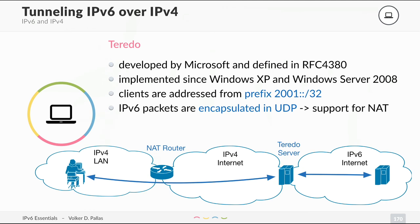This tunnel operates within UDP, traversing the local IPv4 LAN, the router, and the IPv4 internet, with IPv6 only sent out from the Microsoft server. However, as of now, the Teredo servers have been disabled by Microsoft, so this protocol is no longer in use.